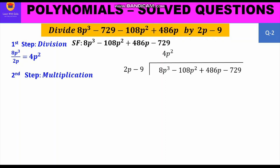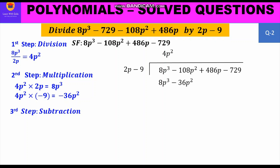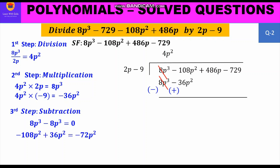Second step — multiplication: 4p² × (2p − 9) = 8p³ − 36p². Write this below the first two terms of the dividend with like terms aligned. Third step — subtraction: change signs to −8p³ and +36p². Then 8p³ − 8p³ = 0, and −108p² + 36p² = −72p². Bring down 486p.